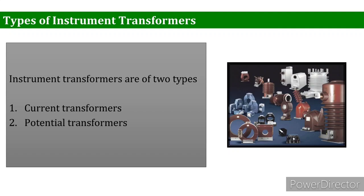Instrument transformers are basically categorized into two types: one is the current transformer (CT) and the other is the potential transformer (PT), also called the voltage transformer. Standard distribution or power transformers do not have CTs and PTs. CTs alone are used at commercial and industrial level where large amounts of electricity are consumed, and the current is stepped down so the meter can read it. For example, a turn ratio of 200:5 or 40:1 means if the real load is 40 amperes, it converts to 1 or 5 amperes.